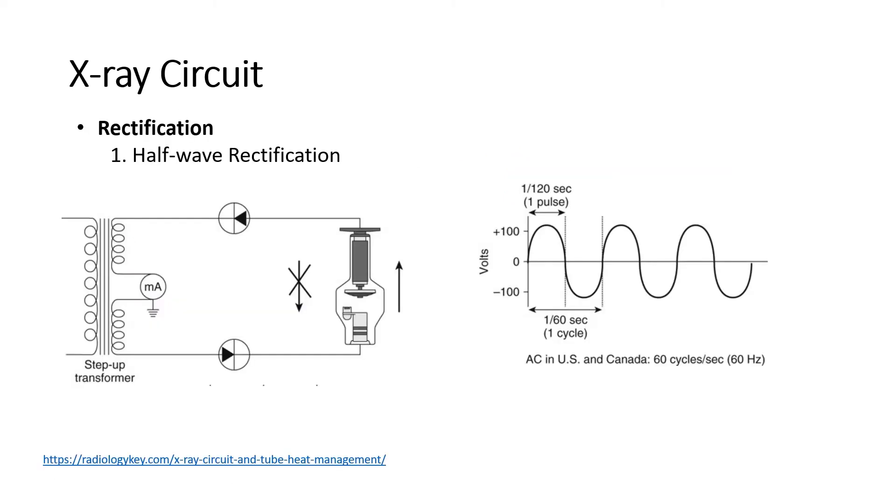Next important concept is rectification. Rectification means changing the alternating current AC into a direct current DC. We want to make sure that the flow of electrons is from the filament going to the target anode and not the other way.